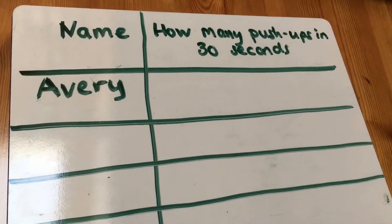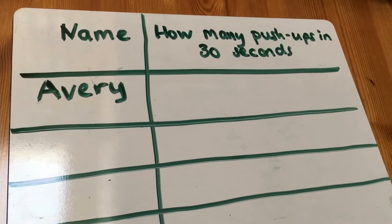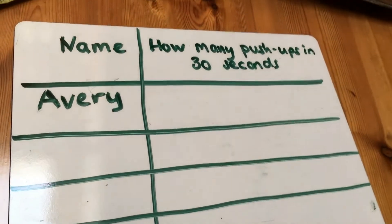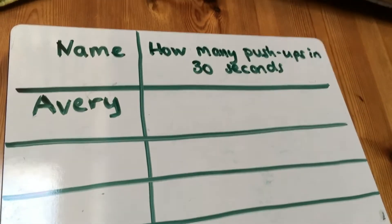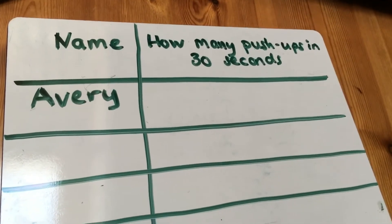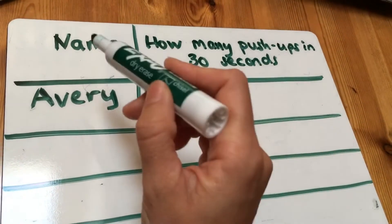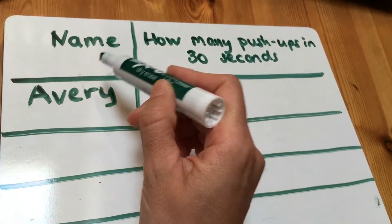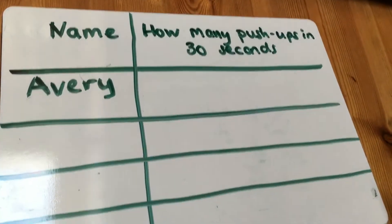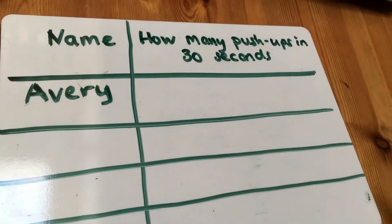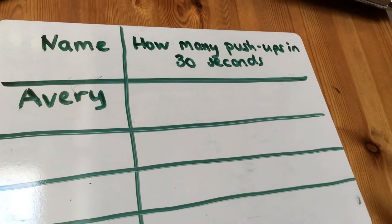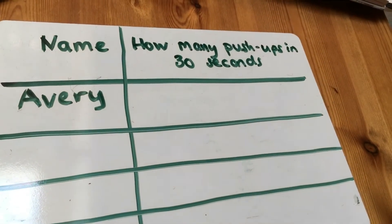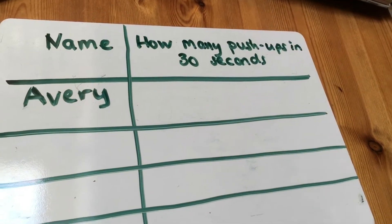Today we are going to be showing our information in a different way, so we're going to be making a tally chart. For a tally chart, we've got a column that has the names of the participants and then a column that tells you how many push-ups in 30 seconds.